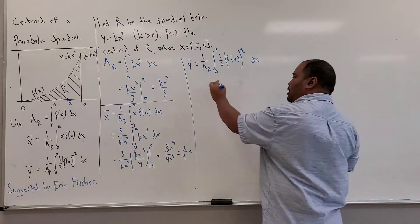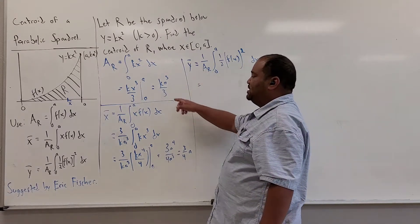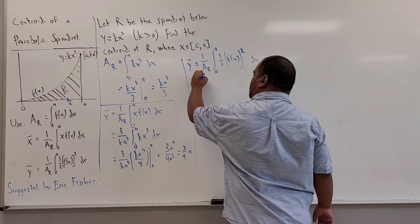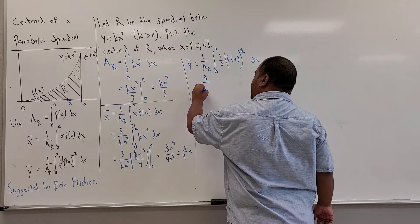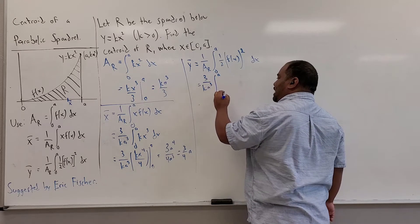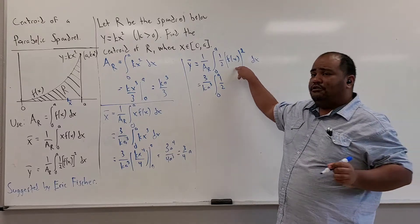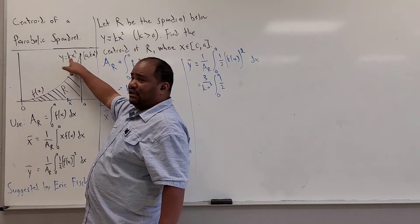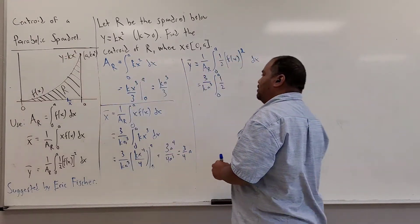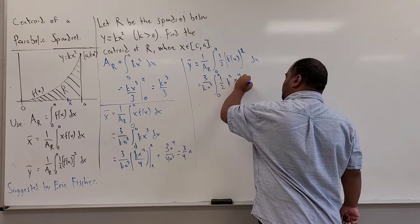And now, we'll replace the things that we know. Again, this is 1 over the area, so it's just a reciprocal of this thing here. 3 over k a cubed times the integral from 0 to a of 1 half. And now f squared is just squaring this thing, so it'll end up being k squared x to the fourth dx.